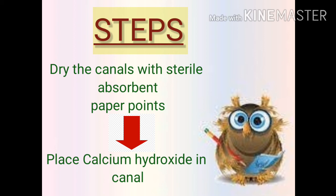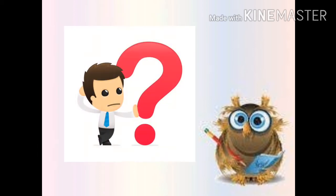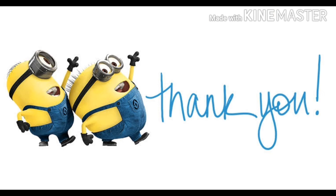Now I'll explain the management steps. Dry the canals with sterile absorbent paper points, then place calcium hydroxide inside the canal. Here is the mechanism: in the weeping stage, the pH of the periapical tissue is acidic, which turns basic after placing calcium hydroxide inside the canal. This is how the weeping stops.